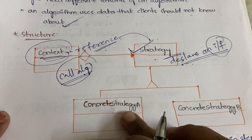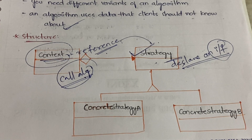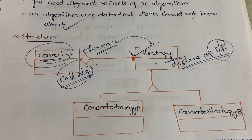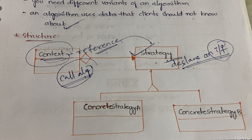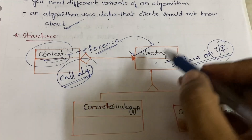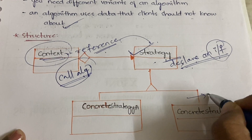The Context will call the algorithm by using the interface defined by Strategy. Strategy has two Concrete Strategies — A and B — and you can have more as per requirement. The Concrete Strategies implement those interfaces. In the main thing you will have the declaration, and the concrete things will implement it. The same applies to Strategy as well — so Concrete Strategy A and B together will handle the implementation part.